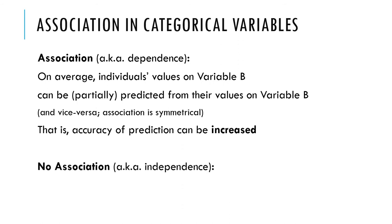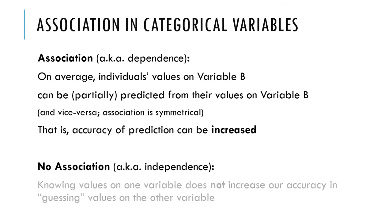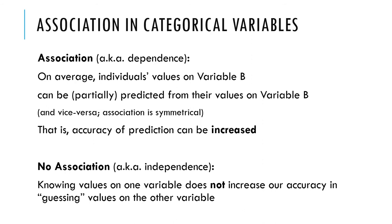If there's no association — in other words, if there is independence between the variables — then knowing the values on one variable does not increase the accuracy of guessing values on the other variable. It doesn't help you at all.